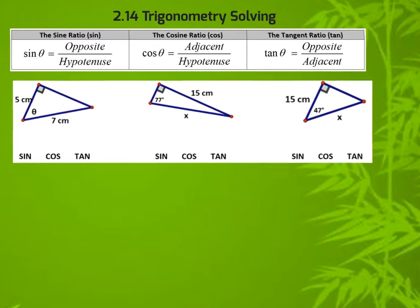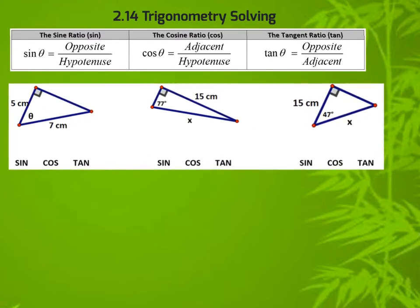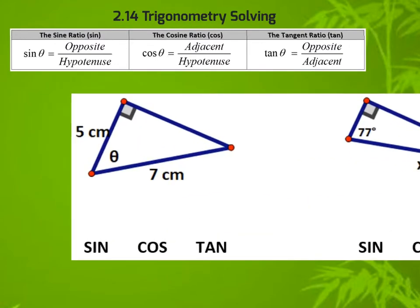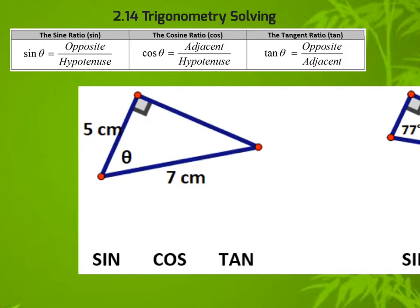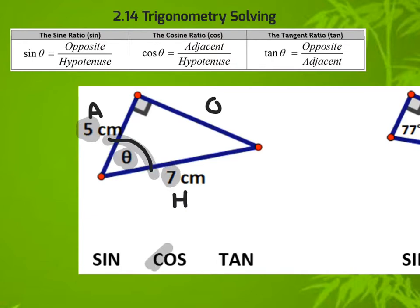Before we worry about solving for anything, we've got to make sure you can recognize the correct relationship to use. The key to success, at least initially, is labeling correctly. Using my technique: this is the hypotenuse, this is the adjacent, this is the opposite. In this case, we're solving for an unknown angle, and we have the adjacent side and the hypotenuse side, so this is definitely a cosine relationship.